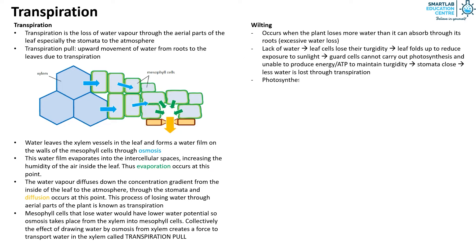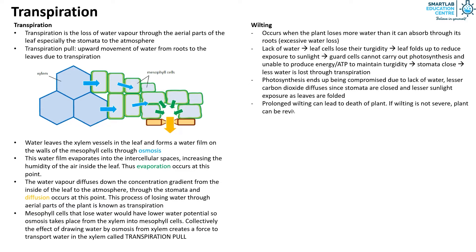When the above occurs, it results in photosynthesis being compromised due to the lack of water, lesser carbon dioxide diffusing since stomata is closed, and lesser sunlight exposure as leaves are folded. Prolonged wilting can lead to death of plant. However, if wilting is not severe, the plant can be revived by supplying water to the plant.